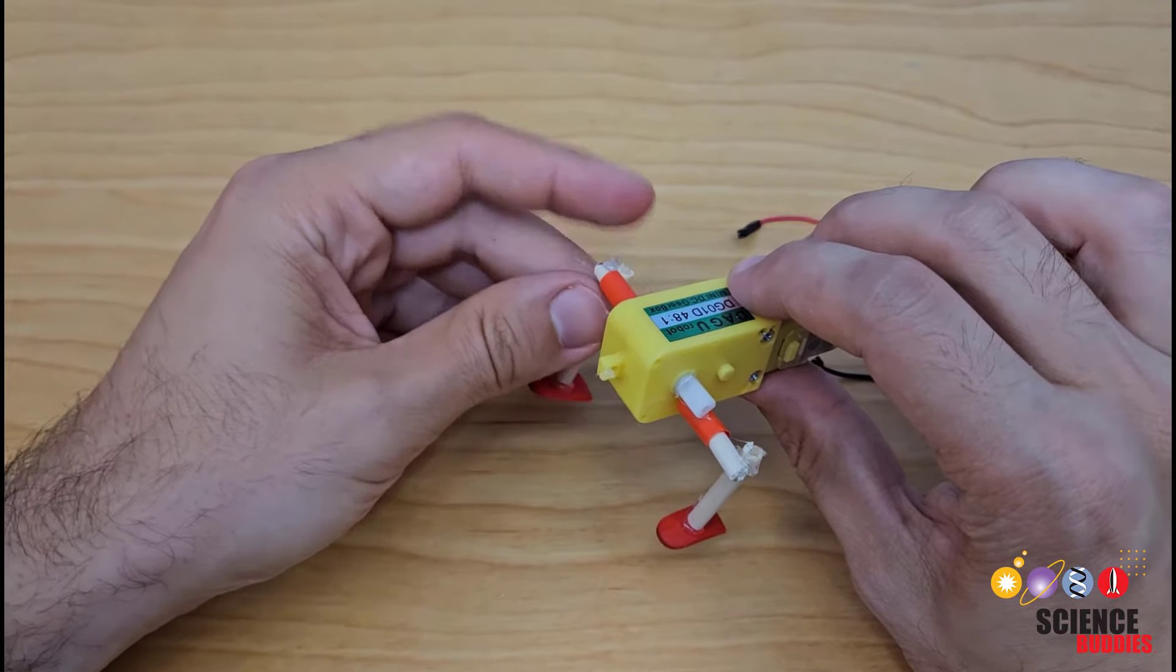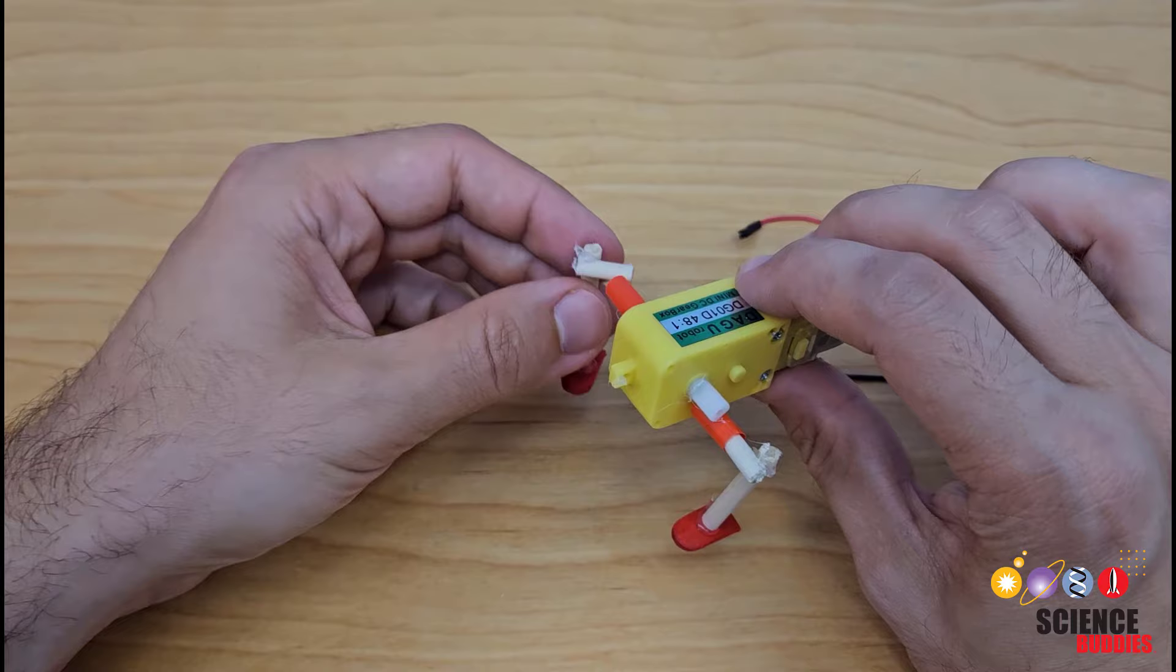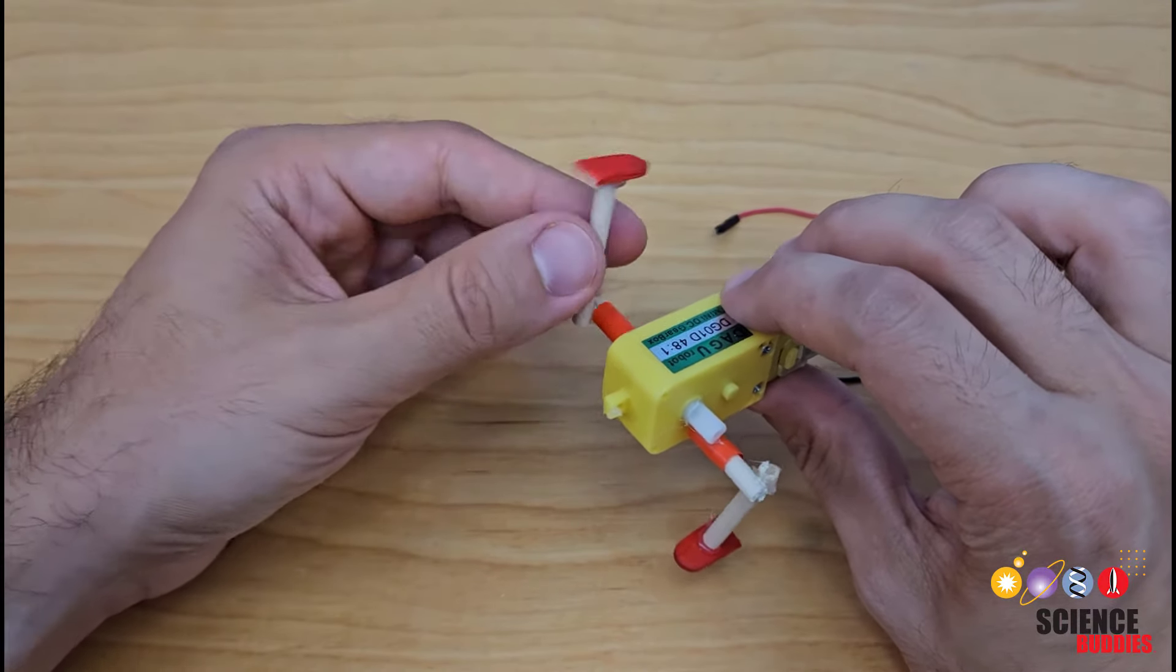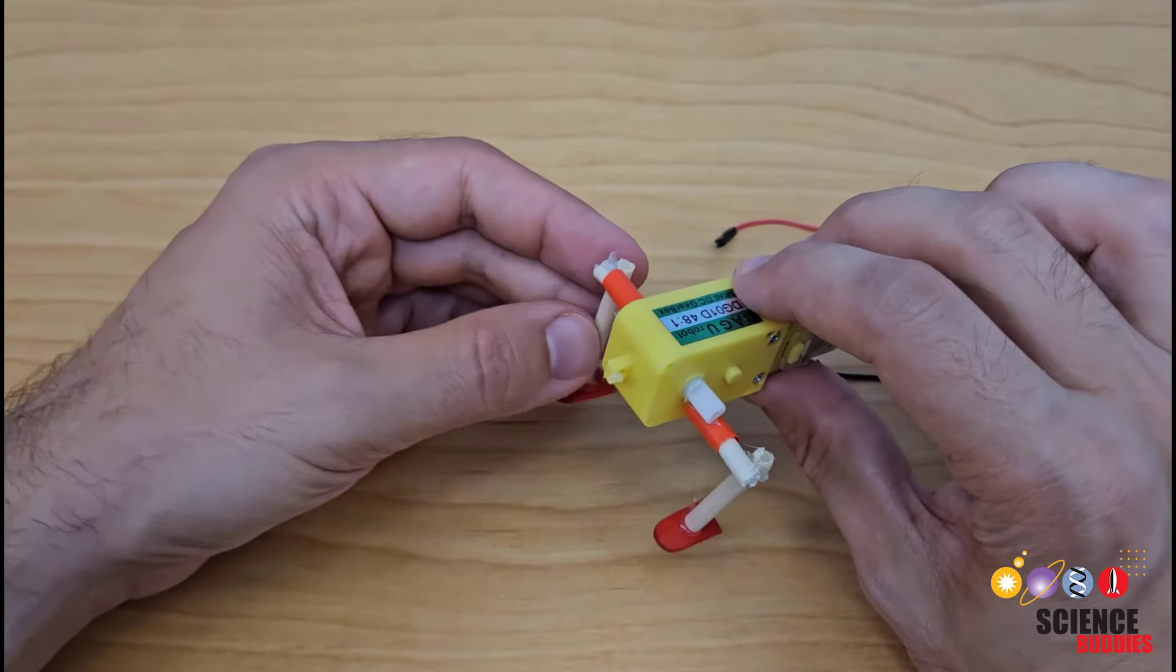Your legs should now look like this and they should be able to rotate freely when you place them into the straws. Make sure you didn't use too much glue which could cause them to get stuck.